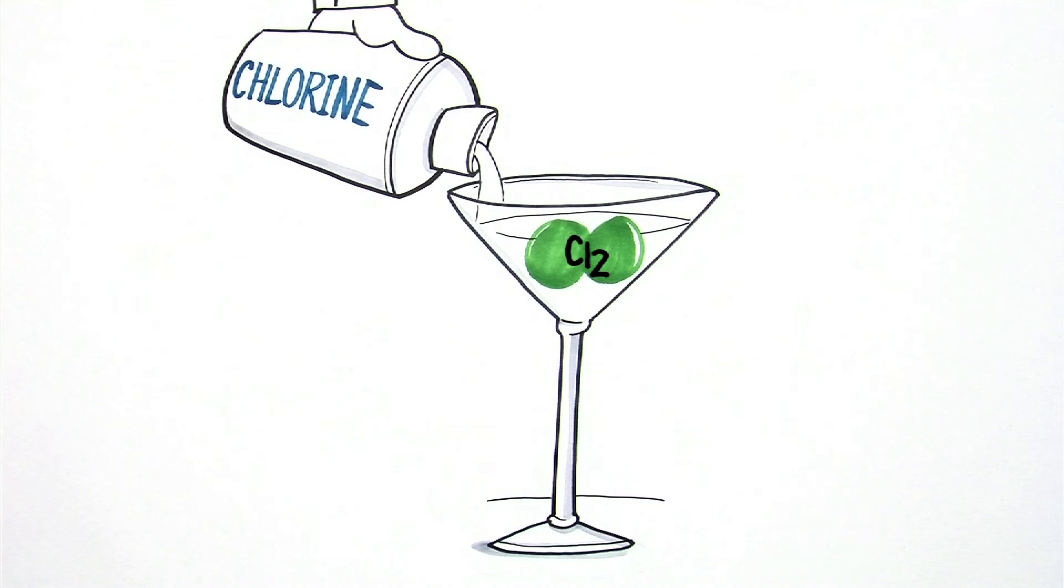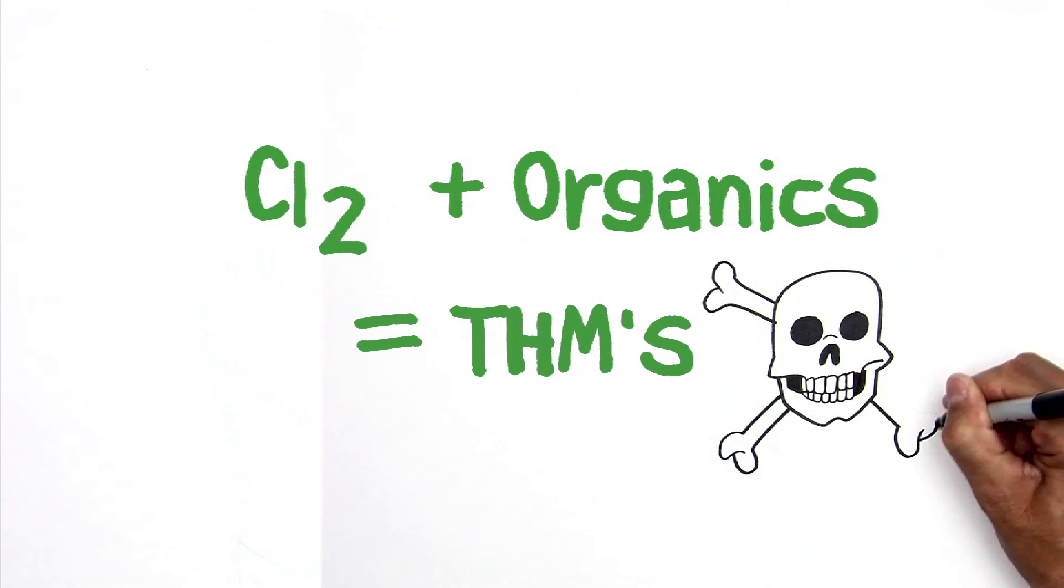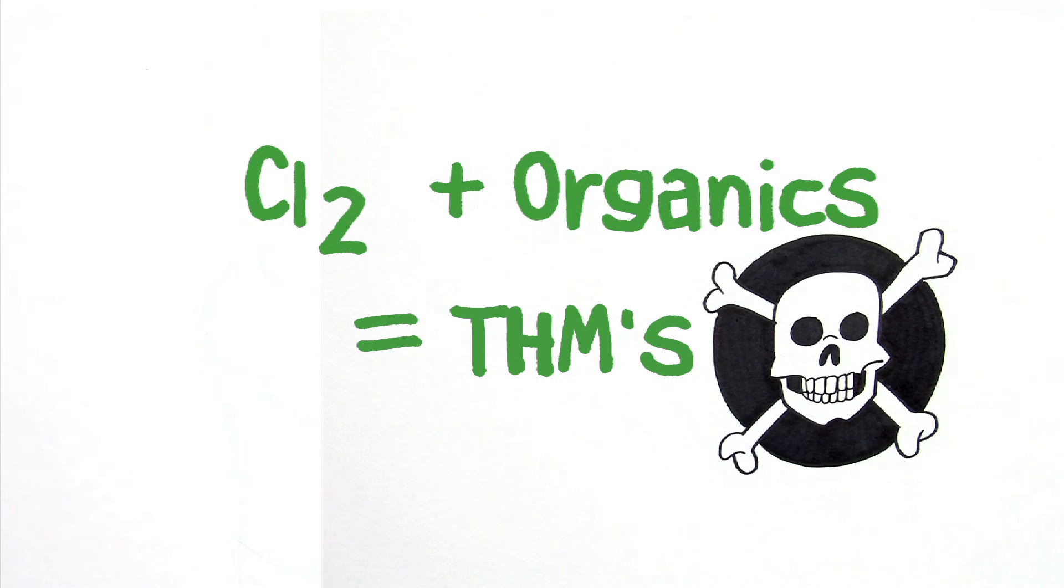So, what's the issue? Well, the reaction of chlorine and organics produces byproducts called trihalomethanes, a group of harmful chemicals whose levels are regulated by the EPA.